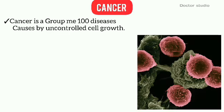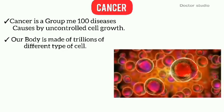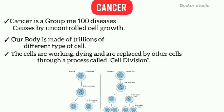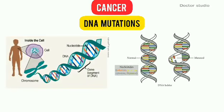Your body is made up of trillions of cells of different types. These cells are constantly working and being replaced through a process called cell division, where the cells make copies of themselves. Now we talk about DNA mutations.